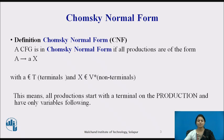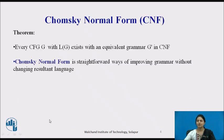Let's define Chomsky normal form. A CFG is in Chomsky normal form if all productions are in the form A producing aX, where capital A is a non-terminal, small a is a terminal, and capital X is again a non-terminal. This means all productions are of the type non-terminal producing terminals followed by non-terminals. Every CFG with its associated language has an equivalent grammar in CNF. Chomsky normal form is a straightforward way of improving a grammar without changing its resultant language.